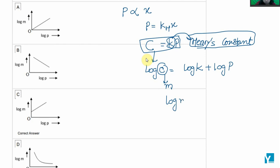So log M equals log k plus log P. If we compare this equation with the standard equation of a straight line, then it can be written in this way, and log M refers to the y-axis.